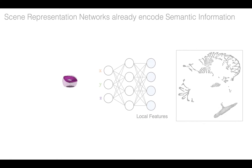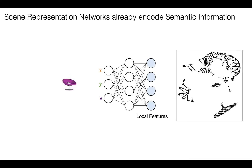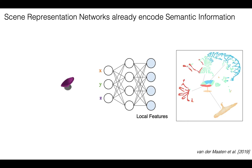Consider a t-SNE plot of the pre-trained SRN features of this chair. If we label the embedded features according to their semantic class, we see that there is a natural clustering. We conclude that the features already contain significant semantic information.